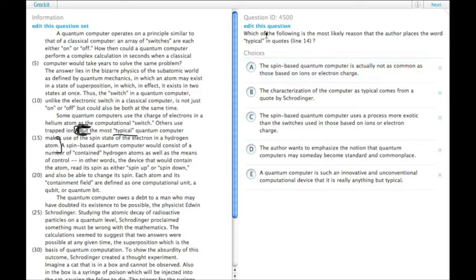So let's look for something like that. Choice A: the spin-based quantum computer is actually not as common as those based on ions or electron charge. Well, you know that may be true, but it does say that the most typical quantum computer uses the spin state of the electron of hydrogen, so all this does is contradict it. It doesn't explain why typical is in quotes.